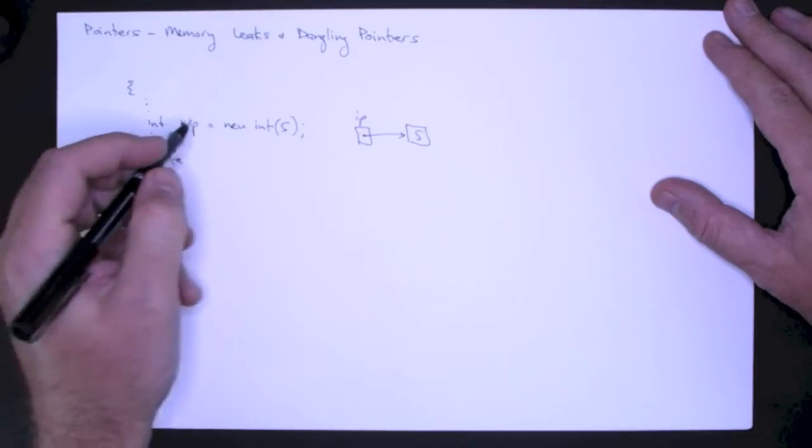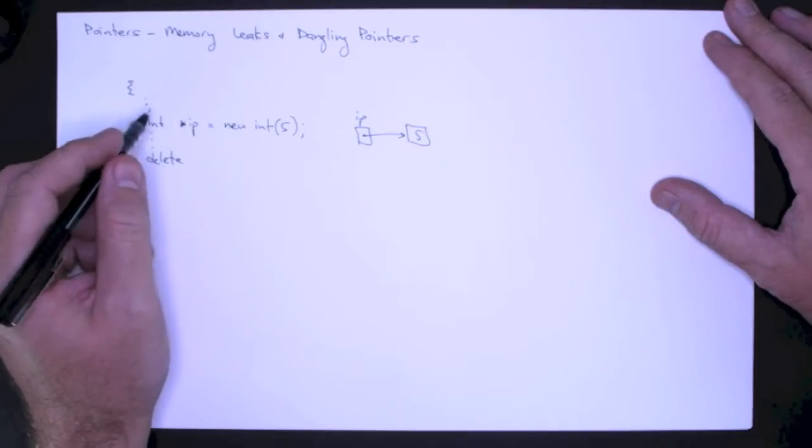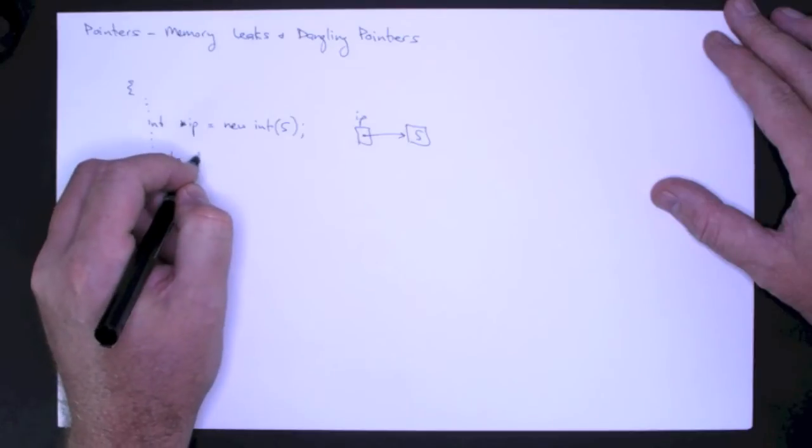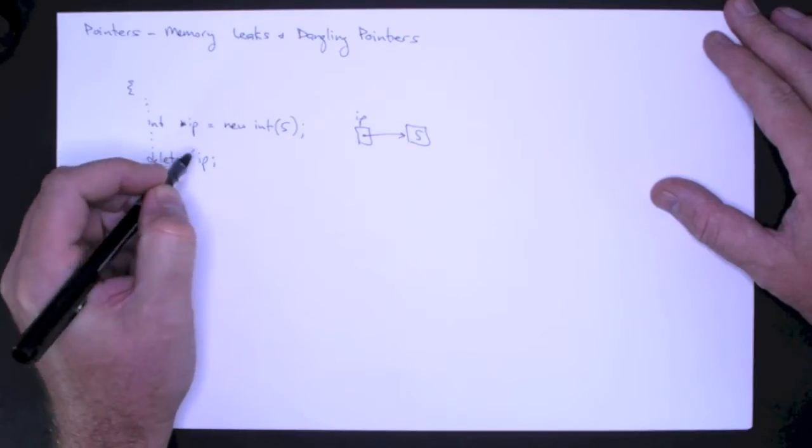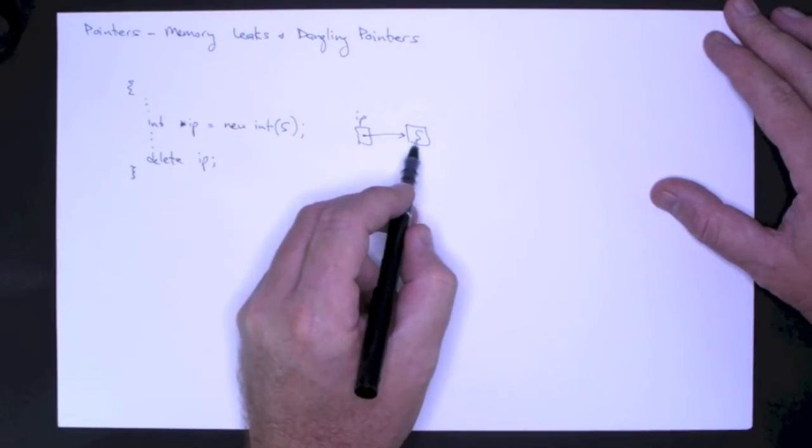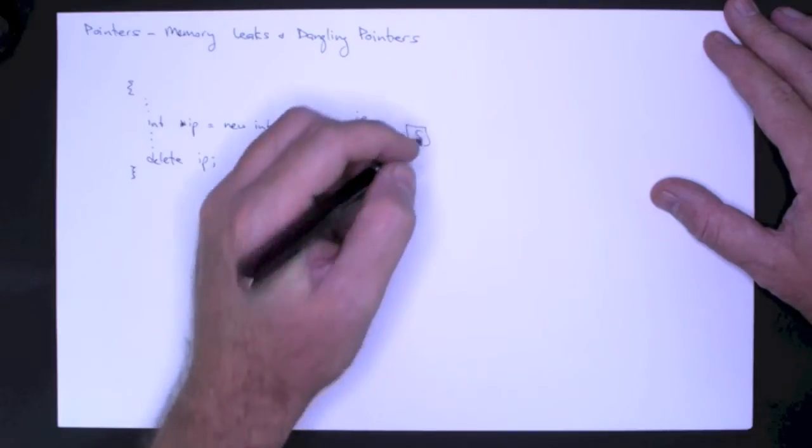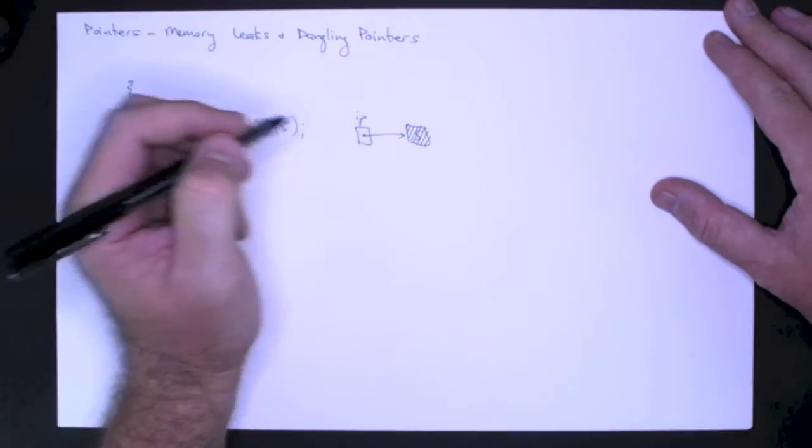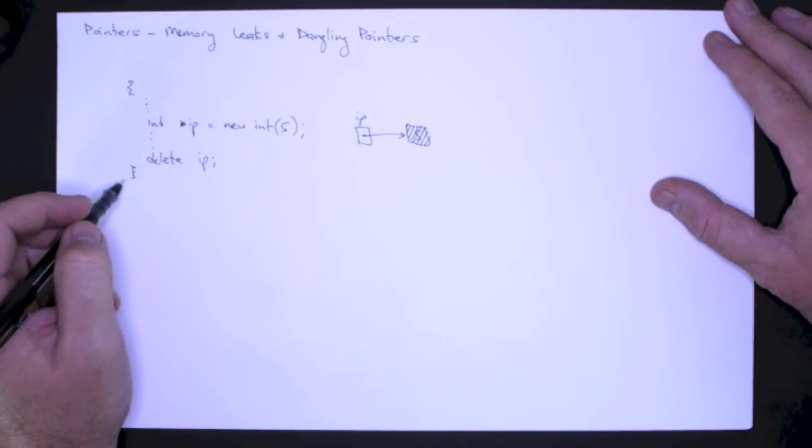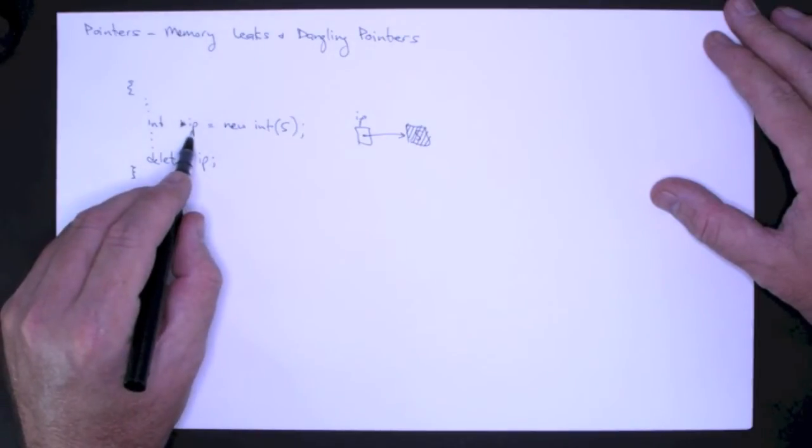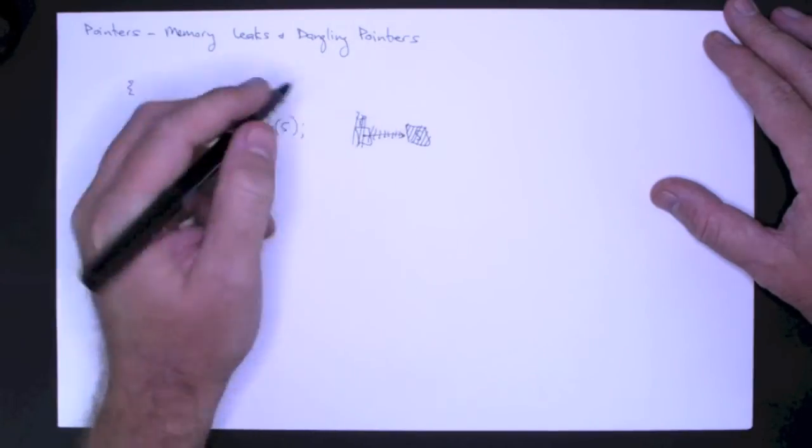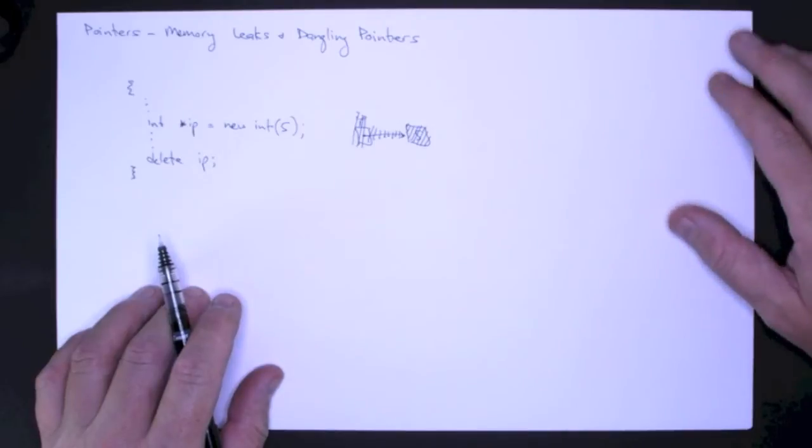And somewhere, either in this block or during program execution, we have to have a delete statement that deallocates the object that the pointer points to. So in this case, 5 will be destructed. And then when we leave the scope of this block, the statically allocated pointer IP will be deallocated. And so there, we're not leaving anything in memory.